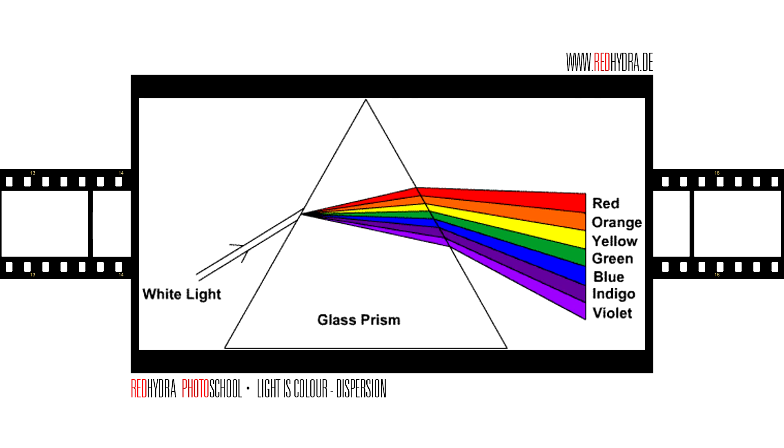They have higher indices of refraction and get bent more than light with longer wavelengths - the ones towards the red end of the spectrum. This is because the index of refraction is smaller for longer wavelengths. I hope that makes sense.